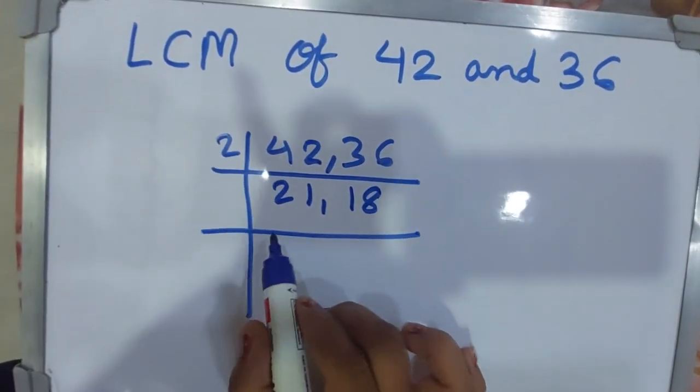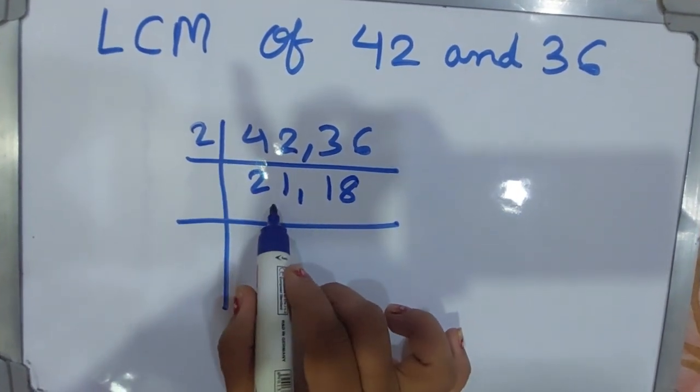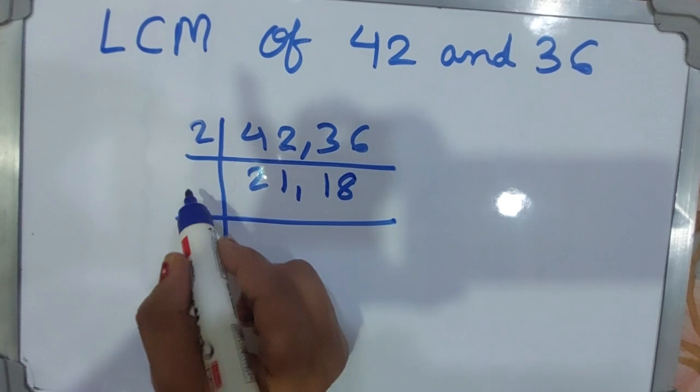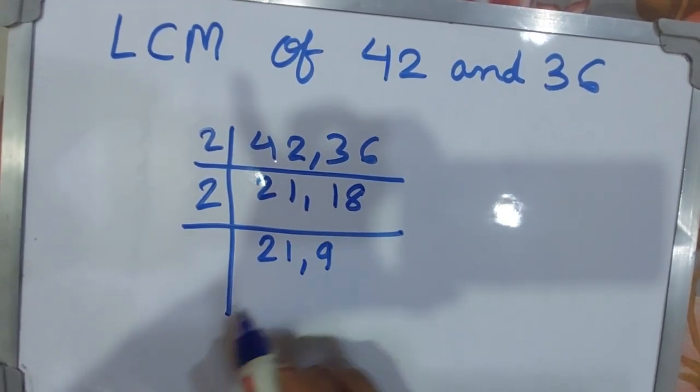Now, can both numbers be divided by 2? No. This number is not divided by 2. Only 18 is divided by 2. Then write 21 as it is, and 2 nines are 18.